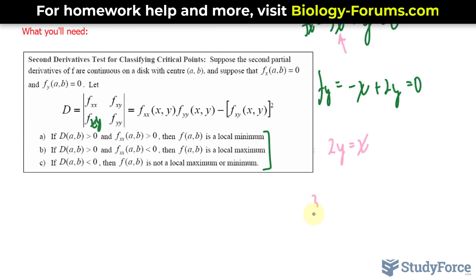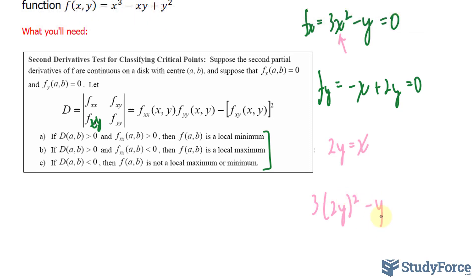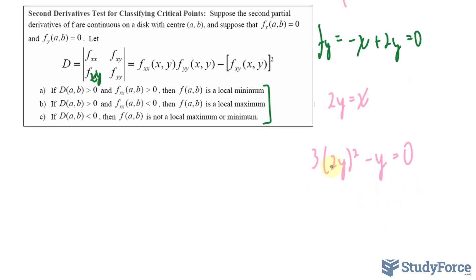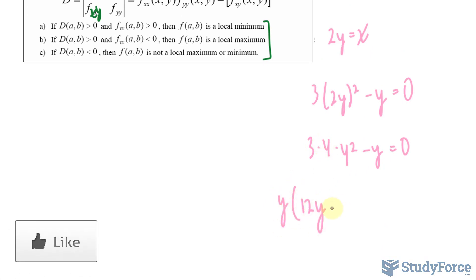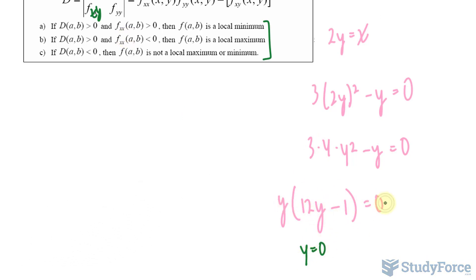So we have 3(2y)² - y = 0. Let's solve for y. Distributing the exponent, we get 3 × 4 × y² - y = 0. This is an incomplete quadratic, so it can be solved without the quadratic formula. Factoring out y, we get y(12y - 1) = 0. Therefore y = 0, or y = 1/12.